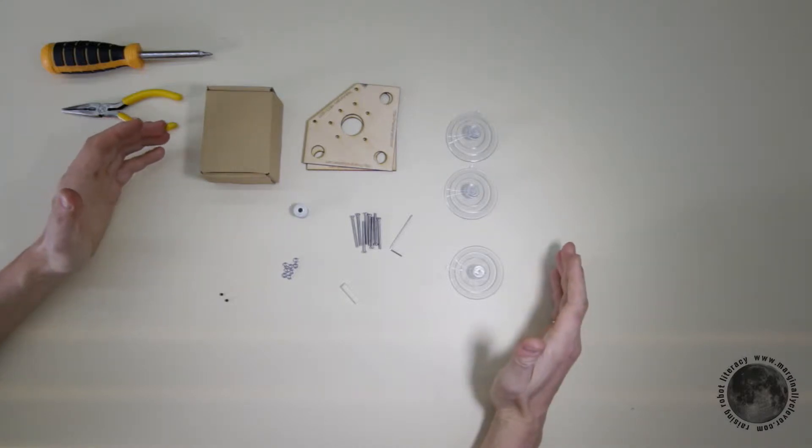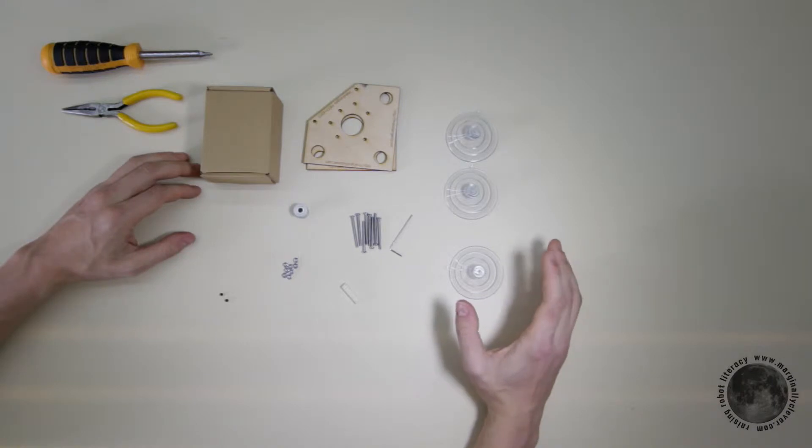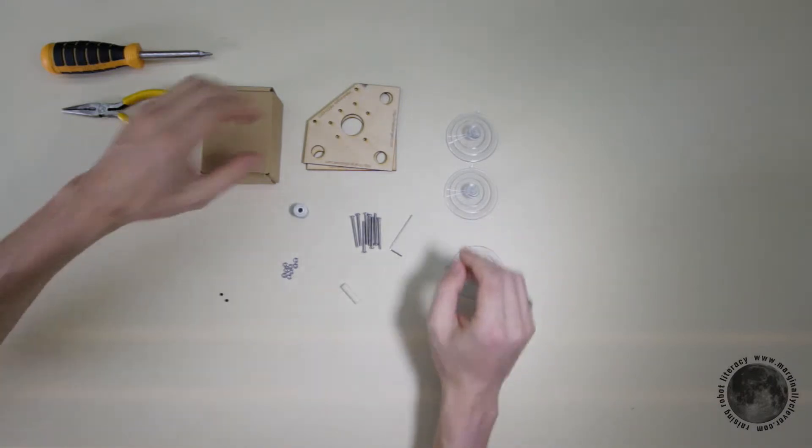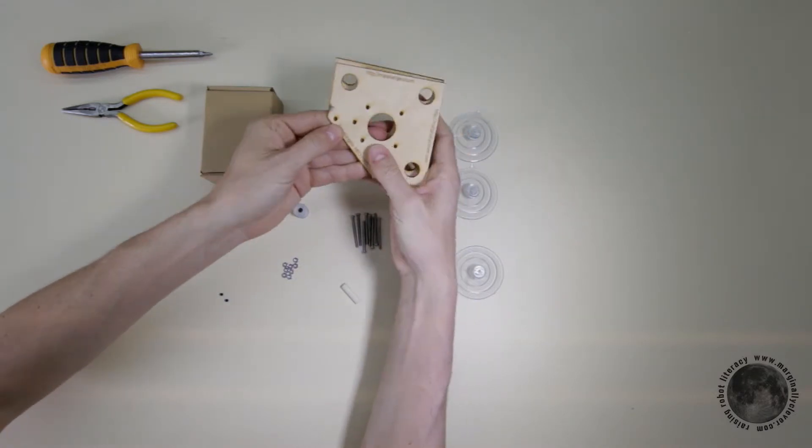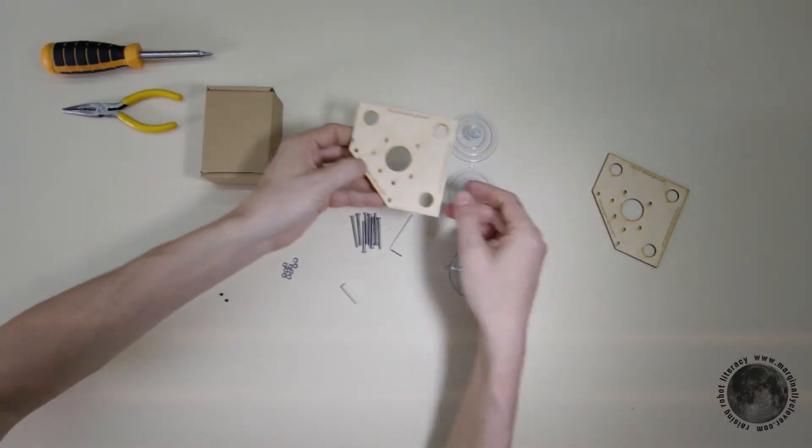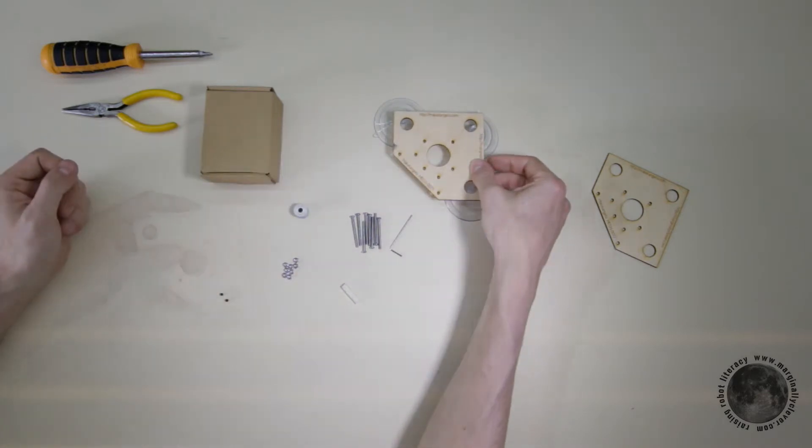The piece we're doing today is a corner motor mount. This piece mounts onto the edge of a board, something like this, or it can mount with suction cups like this onto a whiteboard.